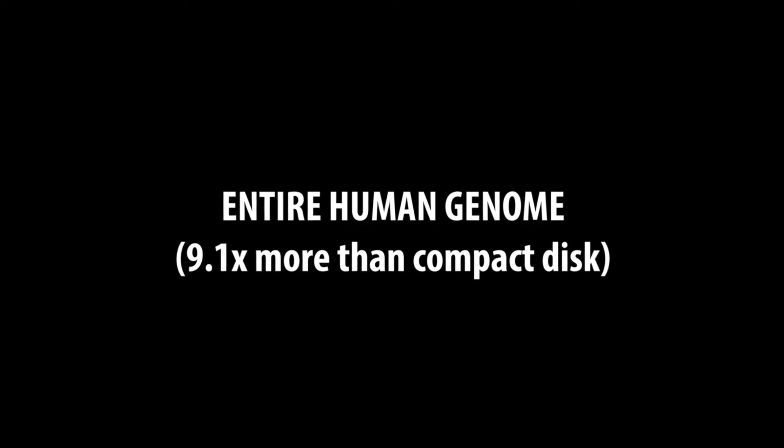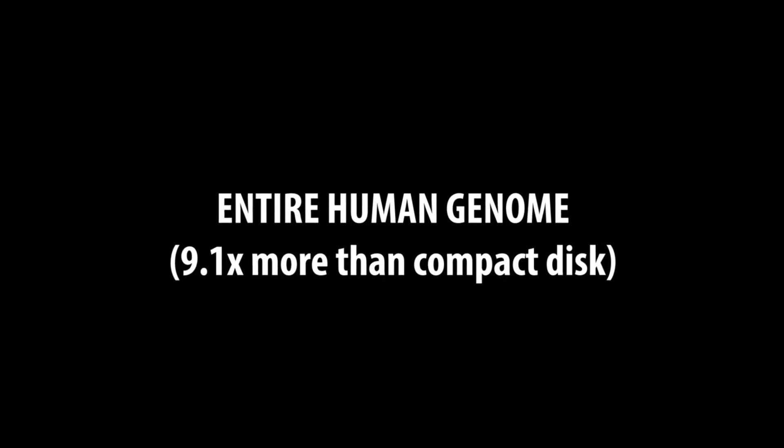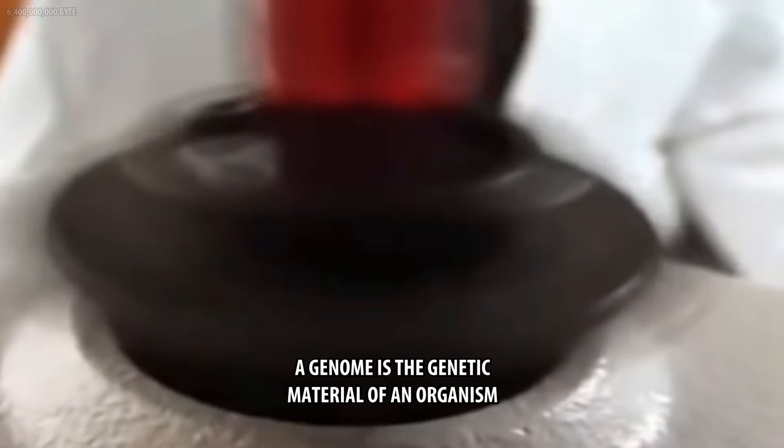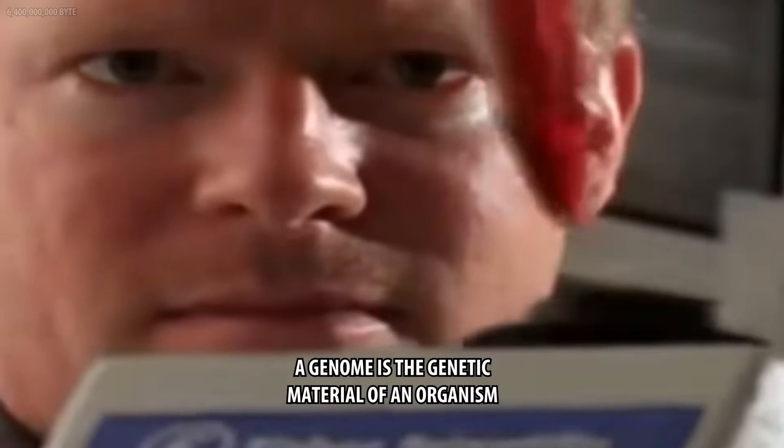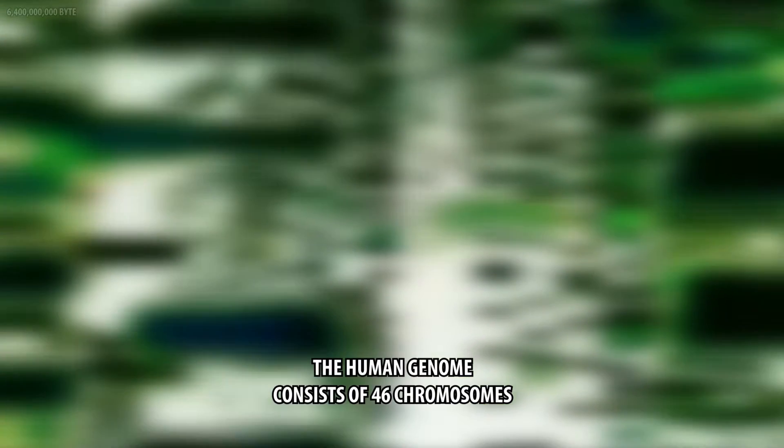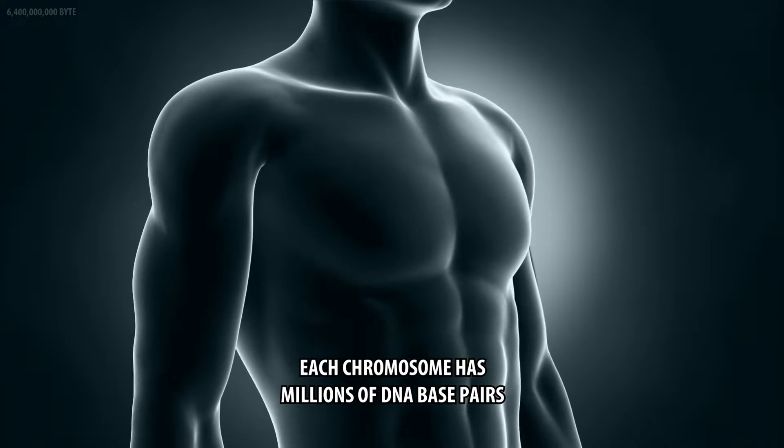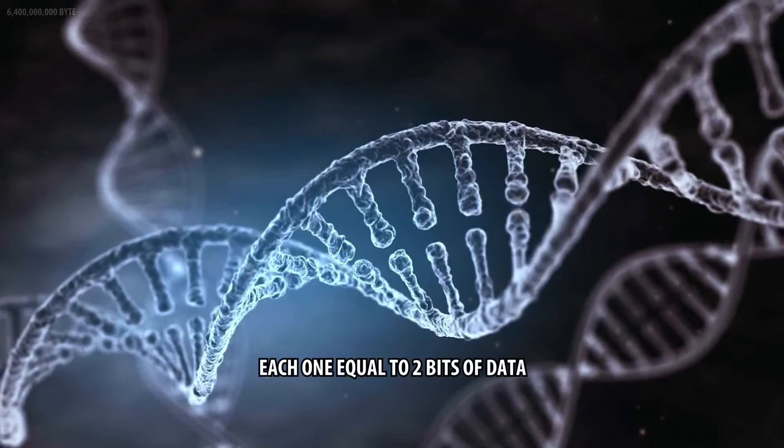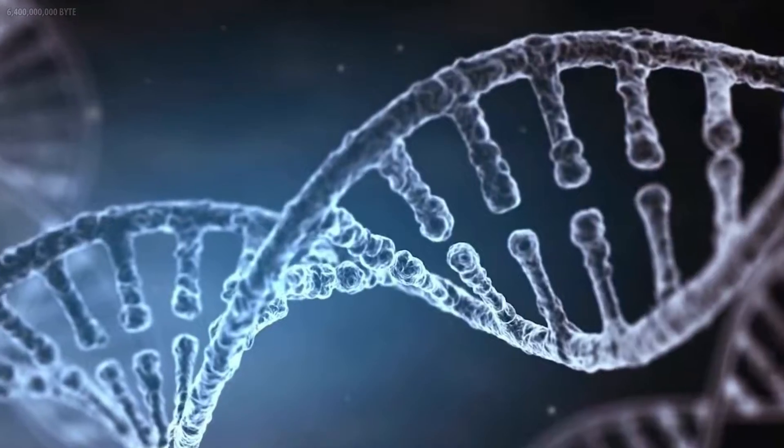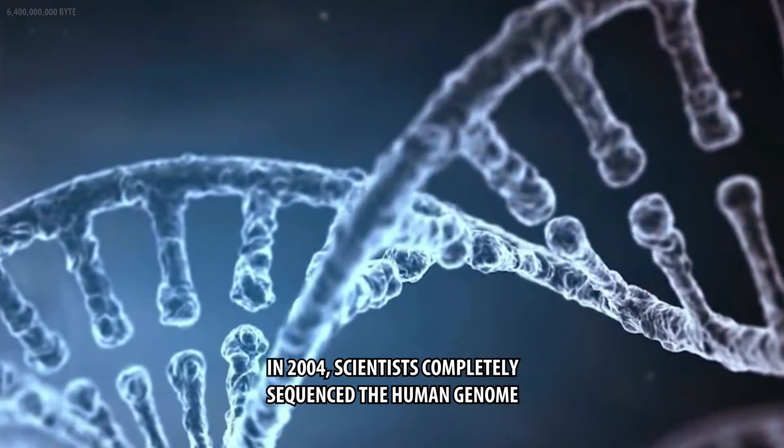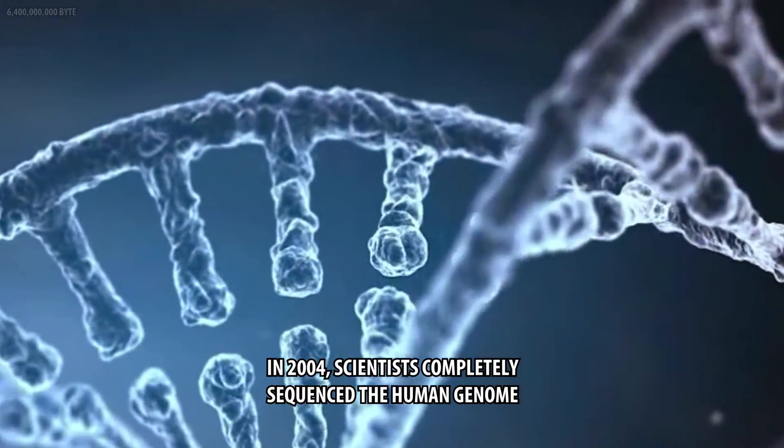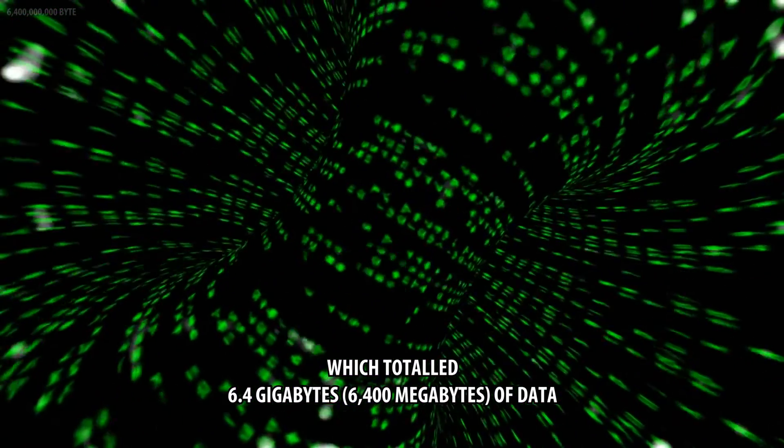Entire human genome, 9.1 times more than compact disk. A genome is the genetic material of an organism. The human genome consists of 46 chromosomes. Each chromosome has millions of DNA base pairs, each one equal to 2 bits of data. In 2004, scientists completely sequenced the human genome, which totaled 6.4 gigabytes of data.